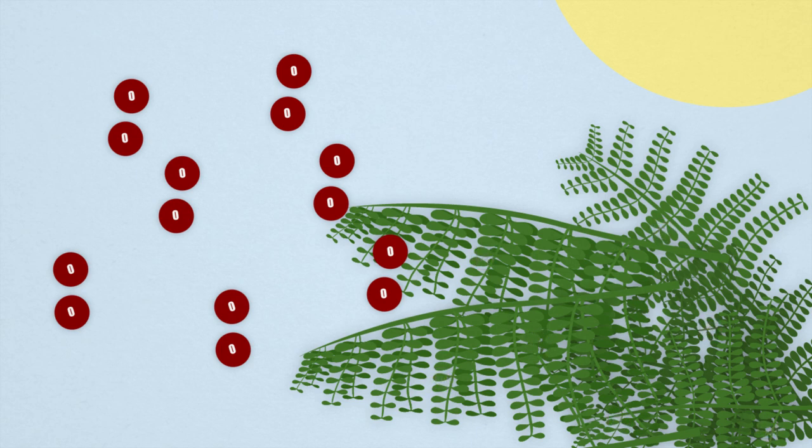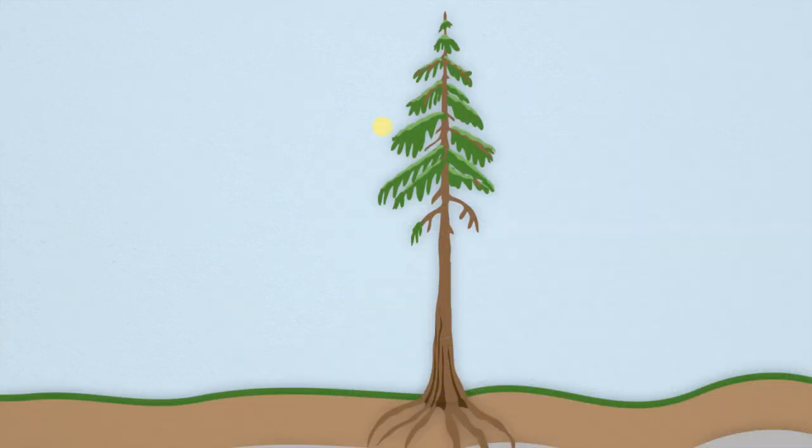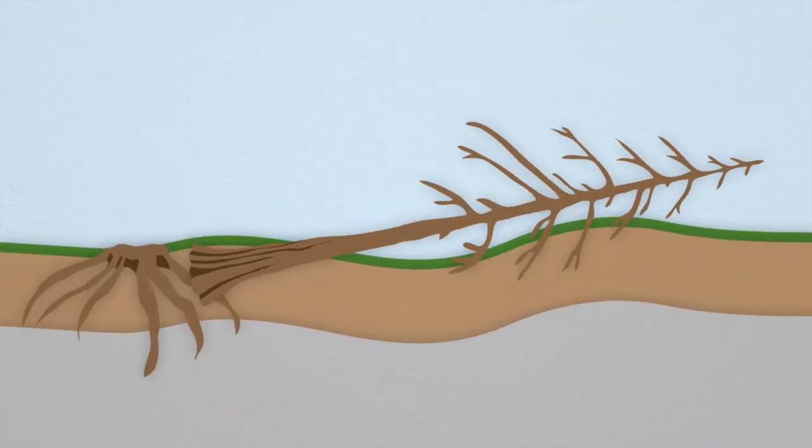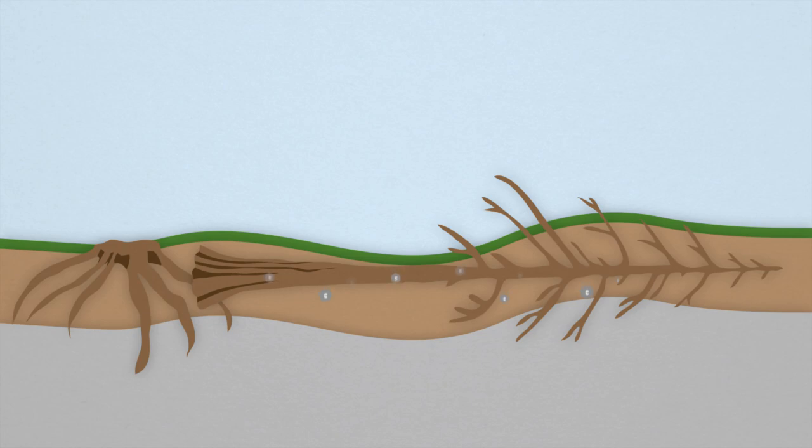Essentially locking up the carbon from the carbon dioxide it originally absorbed in its tissues. When the plants die they rot on the ground and some of that plant material including its carbon gets trapped in the soil.